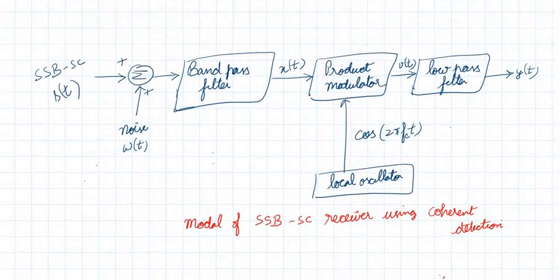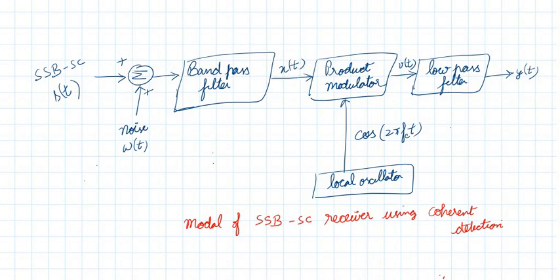This is the demodulator circuit for analyzing the noise. The modulated signal — a single sideband suppressed carrier modulated signal — is added with noise omega of t, which is Gaussian noise. This passes through a band pass filter, and the output x of t contains the modulated signal as well as the filtered noise n of t.